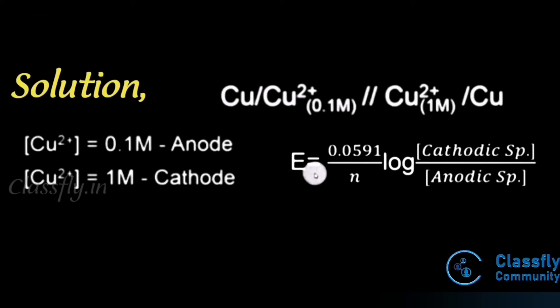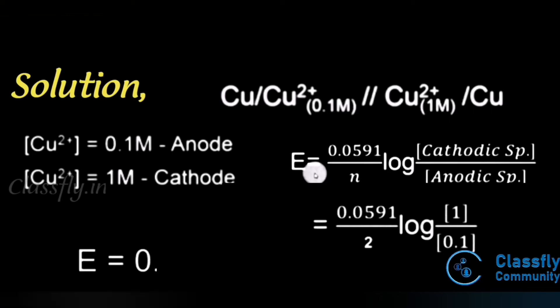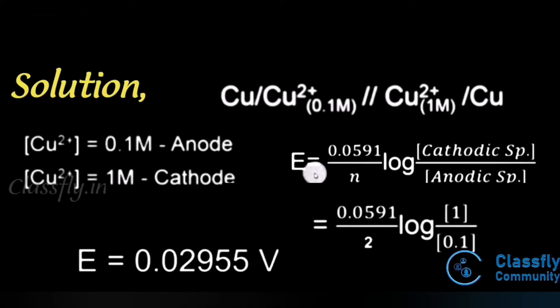With n = 2: E_cell = (0.0591 / 2) × log(1 / 0.1). Calculating this gives E_cell = 0.02955 V.